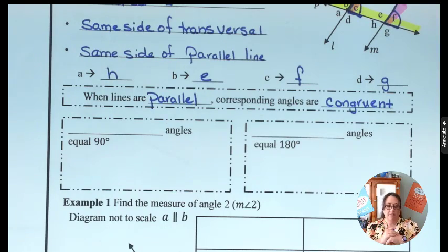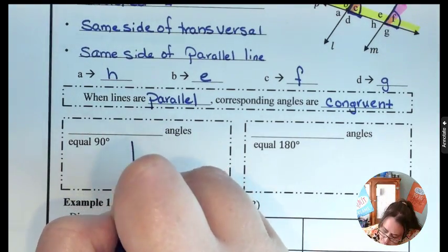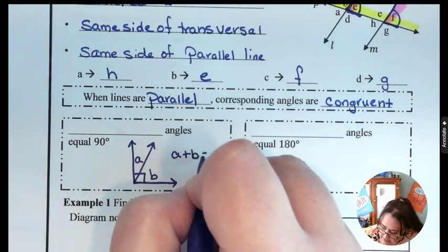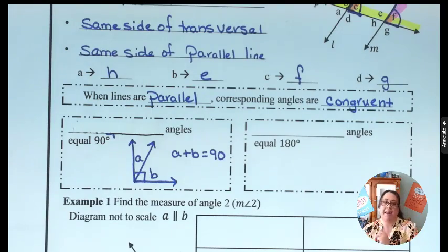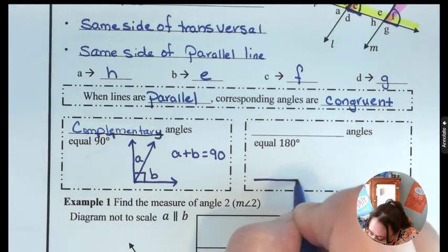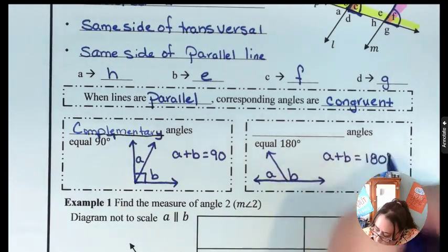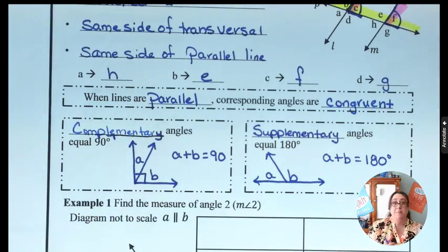Now let's harken back to some things we've talked about before with angle pairs. What kind of angles equal 90 degrees? When A plus B equals 90 degrees, that relationship is called complementary angles — complementary corner. Likewise, if you have a straight line and A plus B equals 180 degrees, those are called supplementary angles — supplementary are straight angles, which are 180 degrees. We need to remember this because we're going to be working with them.